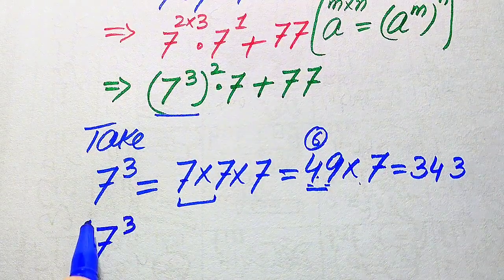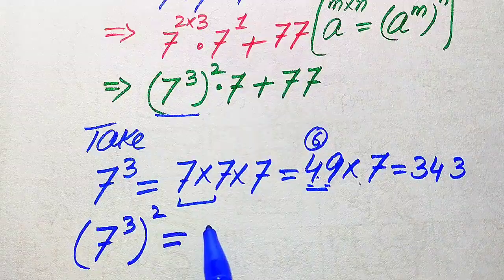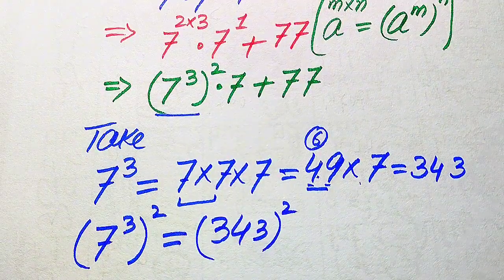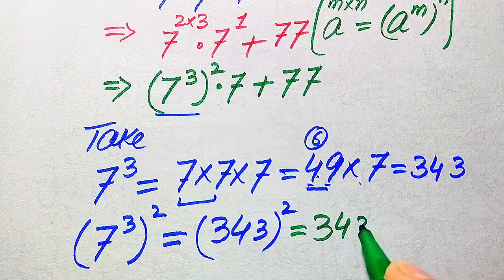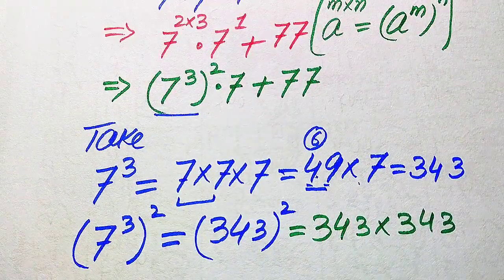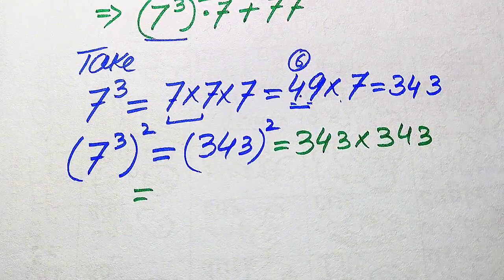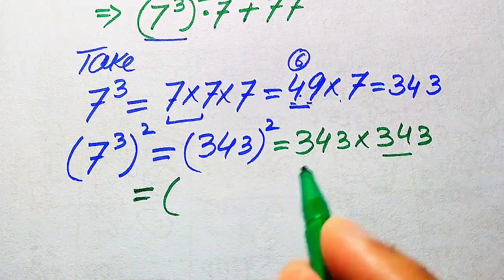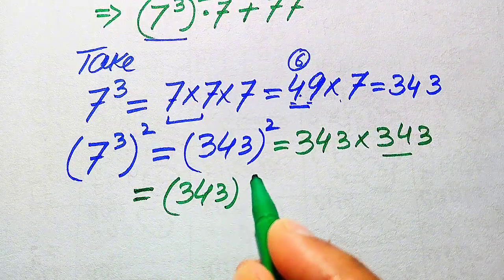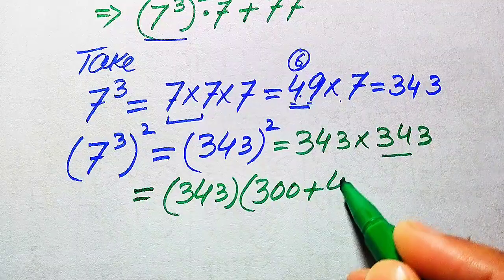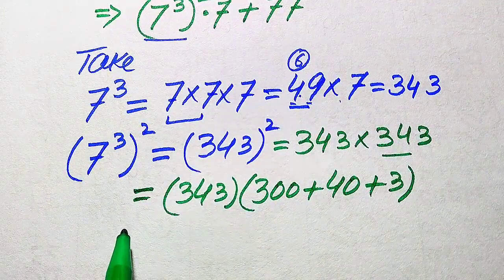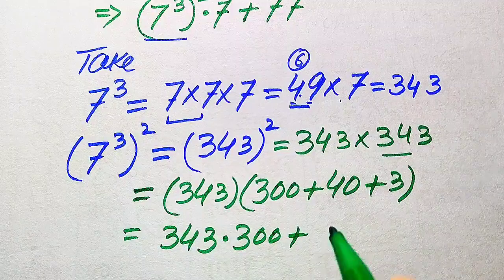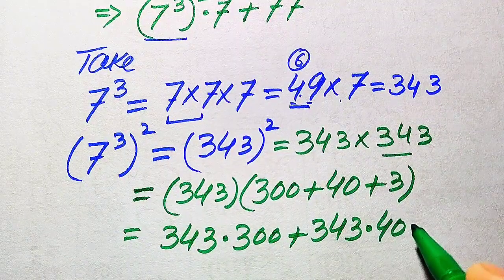The meaning of 343 squared is that we multiply 343 by 343. Here is the smartest way to multiply these two larger numbers without a calculator. We break this value into hundreds and ones form: 343 equals 300 plus 40 plus 3. Now we multiply 343 by each of these values: 343 multiplied by 300, plus 343 multiplied by 40, plus 343 multiplied by 3.